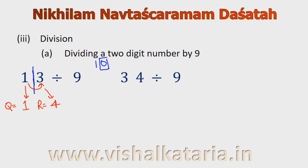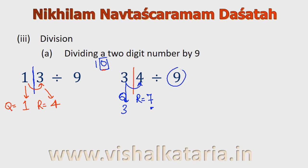Next example: 34 divided by 9. Again the base is 10, so I will put a bar here. The quotient will be equal to 3, and the remainder will be 3 plus 4 which is equal to 7. Remember, the remainder cannot be greater than 9.